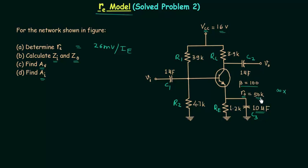RO is equal to 50kΩ, which is a large but finite resistance. As we have already discussed, in case of common emitter configuration, resistance R0 is not equal to infinity but is very large, whereas in case of common base configuration, the output resistance R0 is nearly equal to infinity.